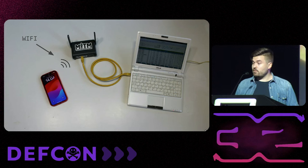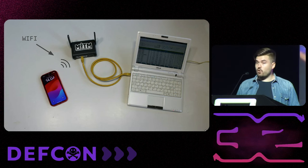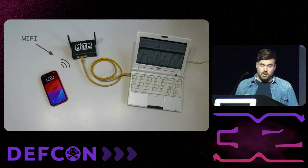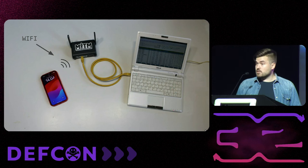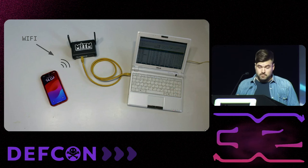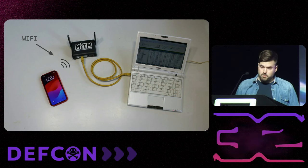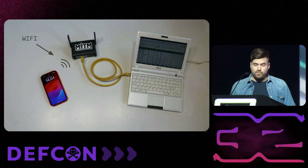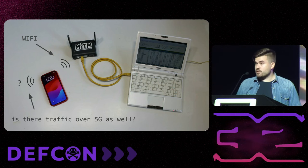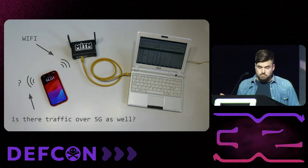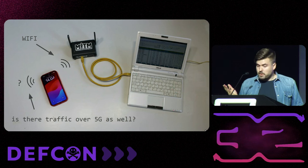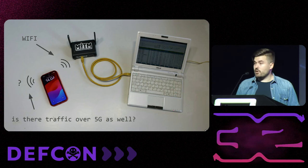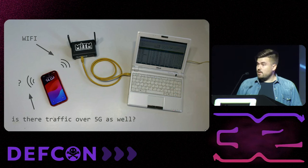There are also different kinds of devices that might have multiple ways of connecting to the Internet. Here we have a phone currently connected to my Wi-Fi access point, and I can see everything it's sending to the Internet. Or can I? There's a little 5G icon there, so it's actually connected to 5G as well. Is there traffic over 5G too? It might be something built in, or there might be something malicious.